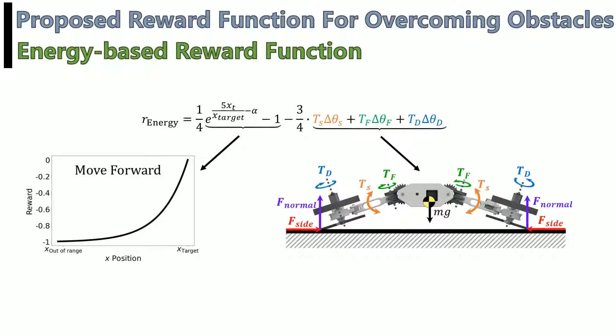To improve the autonomous learning of overcoming obstacles with the R-Star, we proposed an energy based reward function that makes use of the torques and motion of the robot mechanisms.